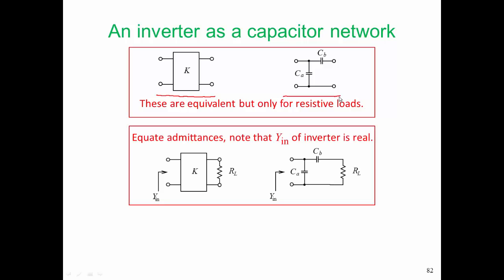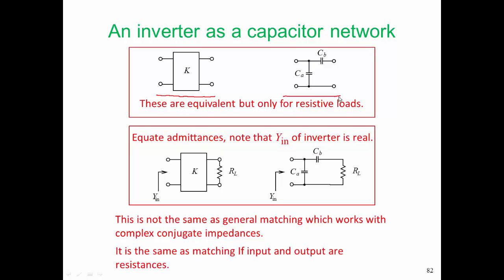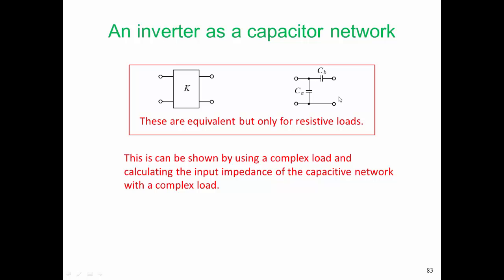The way we're going to determine what the values of CA and CB are going to be is by equating the admittances of the two-circuit with a resistive load. Now I should say at this time, CA and CB don't have to be both positive. In general, they will not be both positive. So this is not the same as general matching, which works with complex conjugate impedances. But it is the same as matching if the input and output are resistances. So these two circuits are equivalent, but only for resistive loads. In fact, we need to see resistances looking both ways.